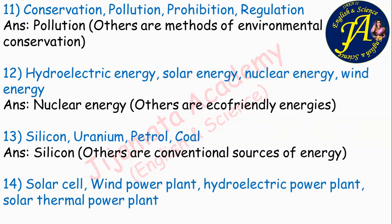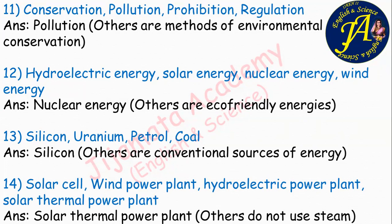Solar cell, wind power plant, hydroelectric power plant, solar thermal power plant. The correct answer is solar thermal power plant. In a solar cell, solar energy is directly converted into electrical energy. In a wind power plant, kinetic energy of wind is directly converted into electrical energy. In a hydroelectric power plant, kinetic energy of water is directly converted into electrical energy. But in a solar thermal power plant, solar energy is first used to produce steam, and the kinetic energy of steam then drives the turbine to generate electrical energy. Therefore, solar thermal power plant is the odd one because it uses steam while the others do not.